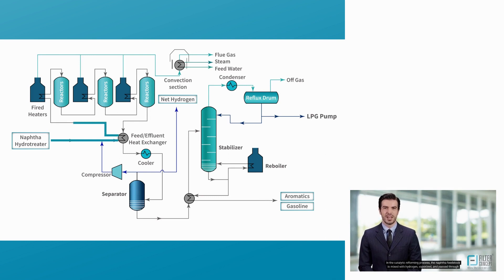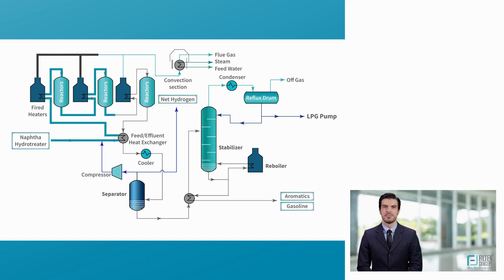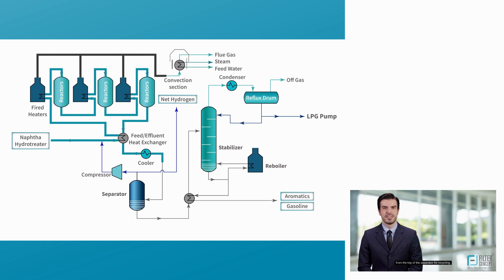The naphtha feedstock is vaporized and passed through a series of alternating furnaces and reactors containing the catalyst. The effluent from the last reactor is cooled and sent to a separator to remove the hydrogen-rich gas stream from the top of the separator for recycling.